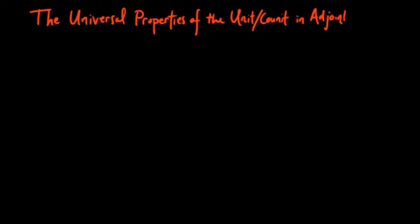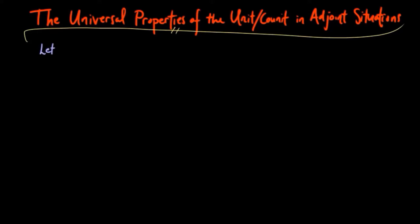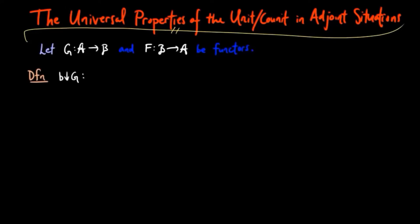In this section, we show that the unit and co-unit of adjoint situations enjoy universal mapping properties. Throughout this section, G and F will be functors. The universal mapping property of the unit at a B object B occurs in the category of B over G.